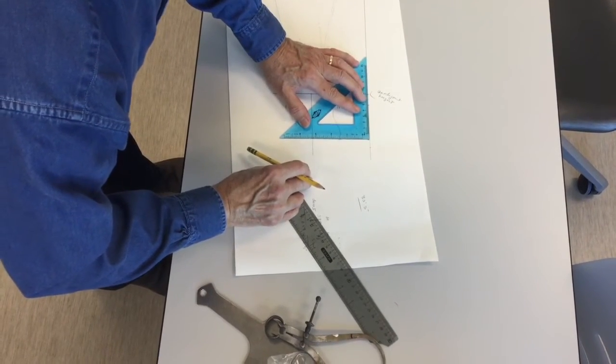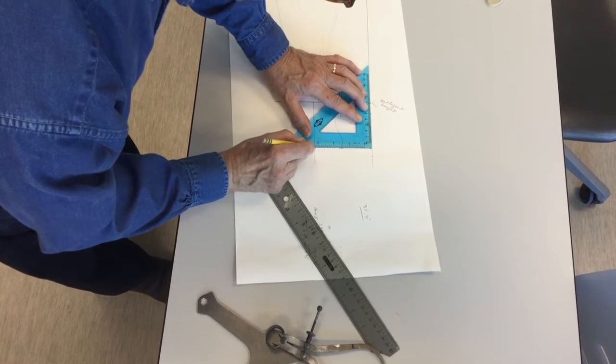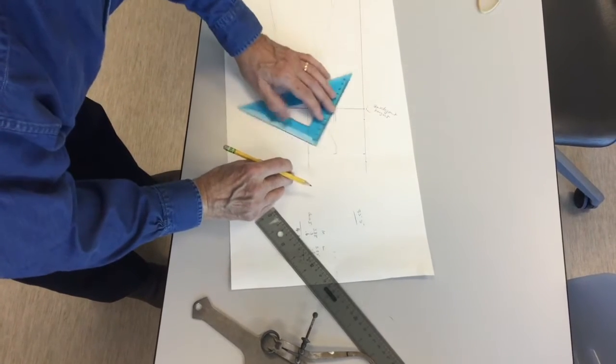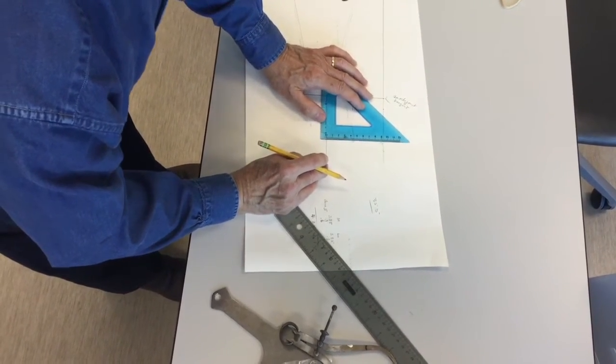So we transfer that to the mid shoe line, and then from it, we take that 35.5.